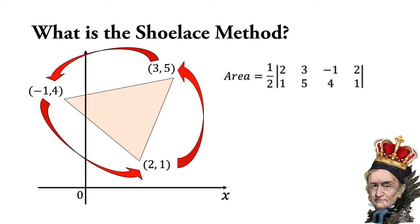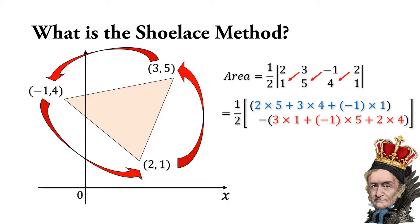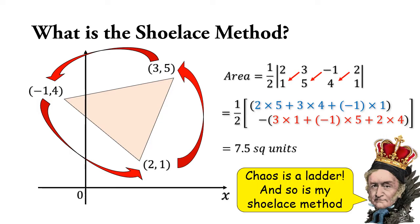Next we're going to take the product of three pairs of numbers. The pairs are shown with these blue arrows. So we need to take 2 times 5, 3 times 4, negative 1 times 1, and we're going to add them together. Next we're going to take another three pairs of numbers shown with these red arrows and we're going to subtract them from the earlier pairs. So we're going to subtract away 3 times 1, subtract away minus 1 times 5, subtract away 2 times 4. And after you do this entire calculation multiplied by half, you're going to get 7.5 square units, which will be the area of this triangle.